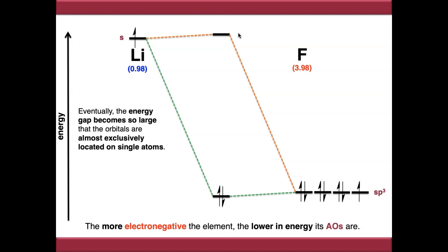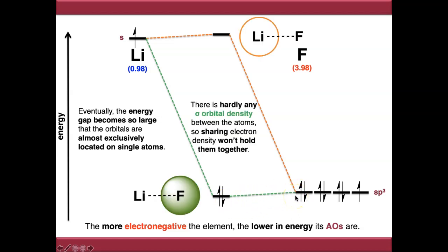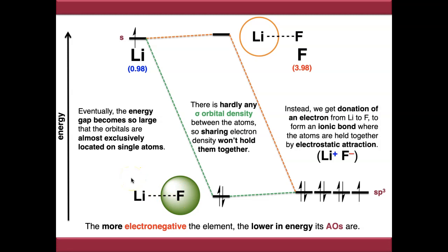When orbitals are so far apart in energy — as in lithium fluoride — the energy gap becomes so large that the orbitals are almost exclusively on their respective component atoms, with very little sigma orbital density between them. Placing electrons in such an orbital cannot hold the atoms together, so no covalent bond forms. Instead, an electron is transferred from the electropositive to the electronegative element, forming an ionic bond, where the atoms are held together by electrostatic attraction as formally charged ions.